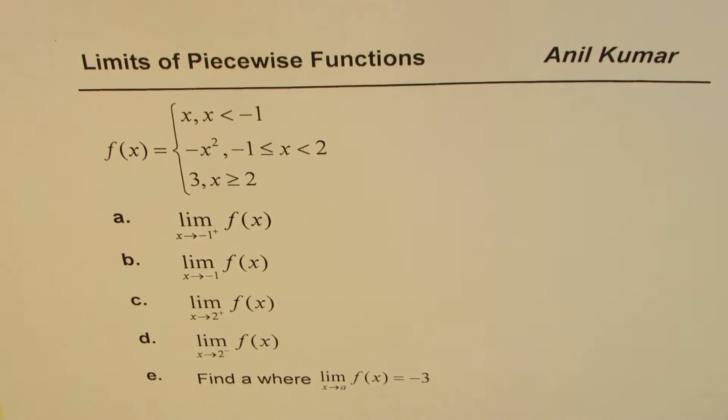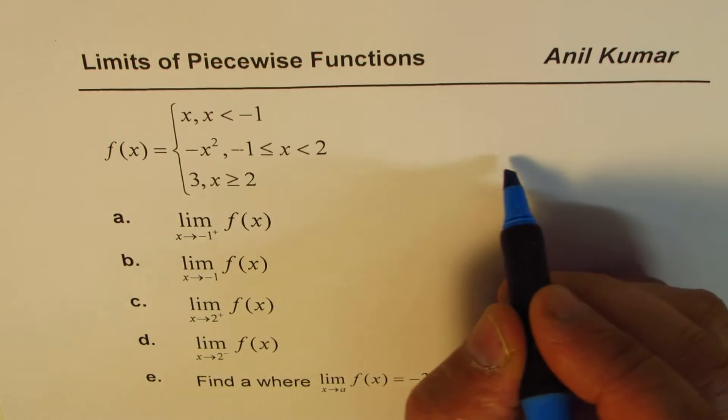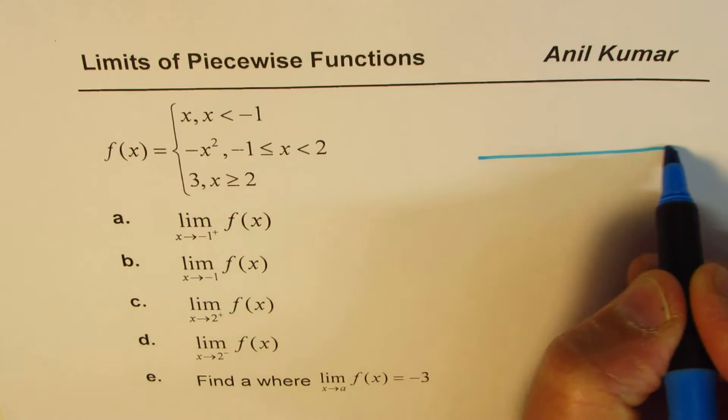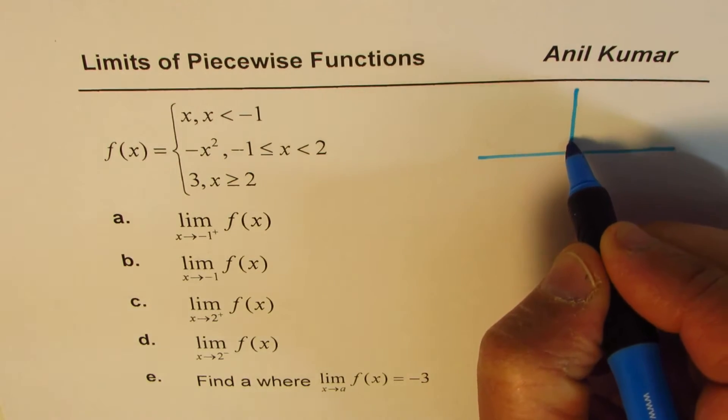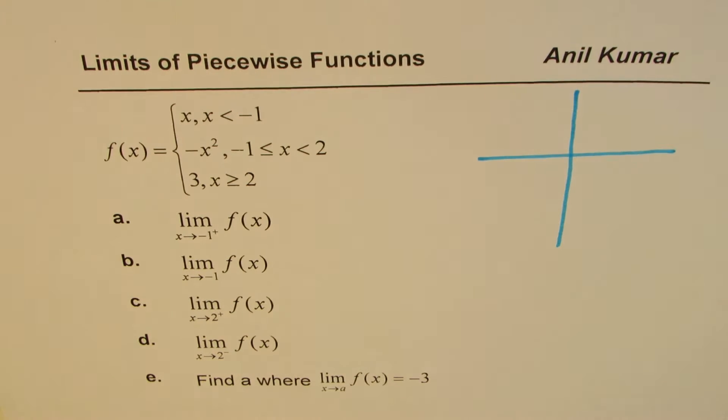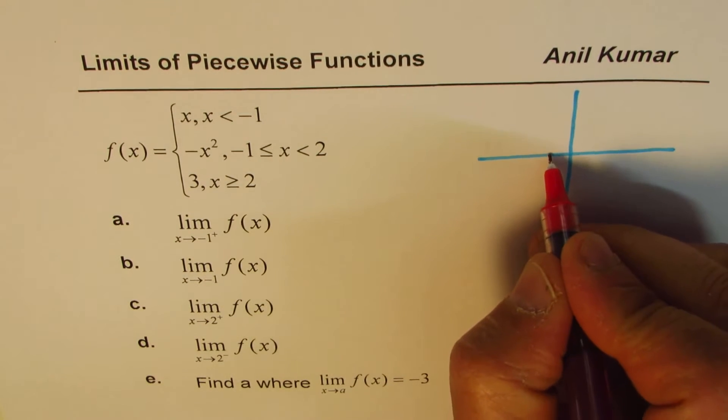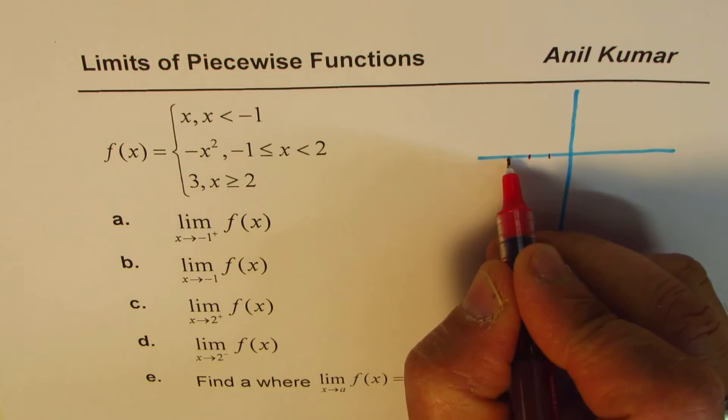So there are three different pieces in this function and these pieces are continuous in their own intervals, but we are not very sure whether they form a continuous function or not.